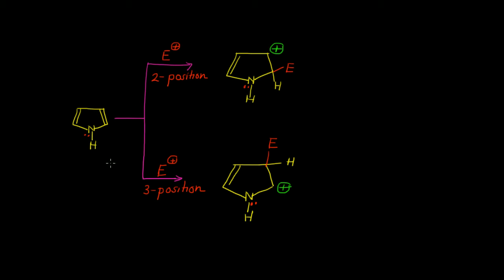Let us take the example of pyrrole. Pyrrole is a 5-membered ring. In pyrrole we can write the numbering: on the heteroatom there will be position number 1, then we have 2, 3, 4, and 5.